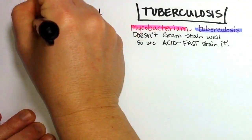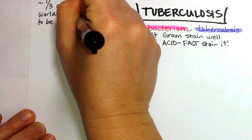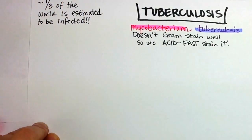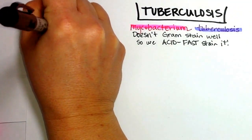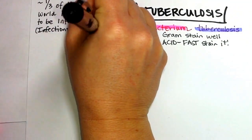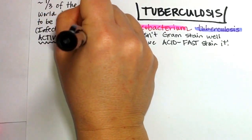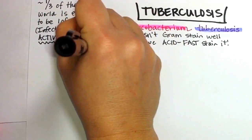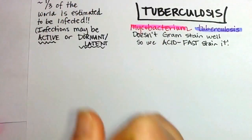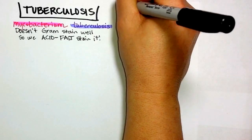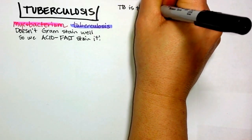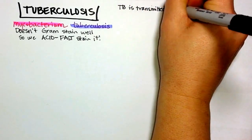It is estimated that a third of the world has mycobacterium tuberculosis in their lungs. That doesn't mean they're all sick — it could be dormant or it could be active. If dormant, they won't have symptoms.